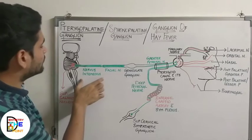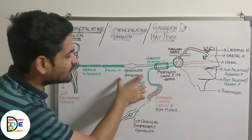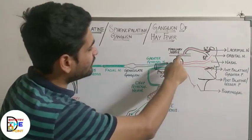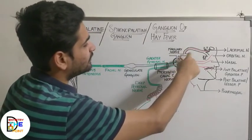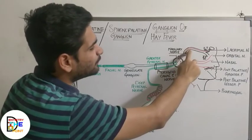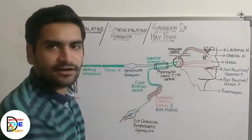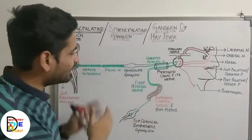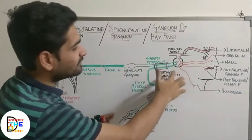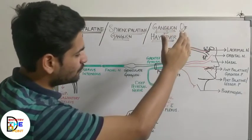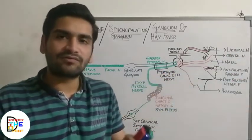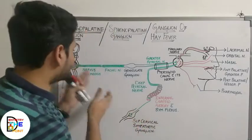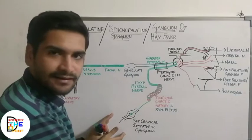To revise the parasympathetic supply: superior salivatory nucleus → nervus intermedius → facial nerve → geniculate ganglion → greater petrosal nerve → nerve of the pterygoid canal → relay in pterygopalatine ganglion → postganglionic fibers with maxillary nerve → zygomatic branch → communicating branch to zygomaticotemporal → lacrimal nerve → lacrimal gland. For the sympathetic supply, the fibers do not relay in the ganglion; they pass through and directly supply the mucosa of the lacrimal gland, nose, paranasal spaces, palate, and pharynx — providing vasomotor supply.